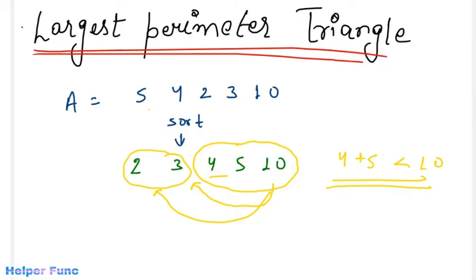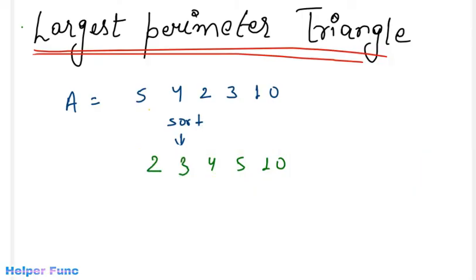So what we do is we just shift to one more side. That is, now we will check for 3, 4, and 5. And here we can see that these three satisfy the condition. That is, 3 plus 4 is greater than 5, 4 plus 5 is greater than 3, and 5 plus 3 is greater than 4. Thus, these three sides make a triangle